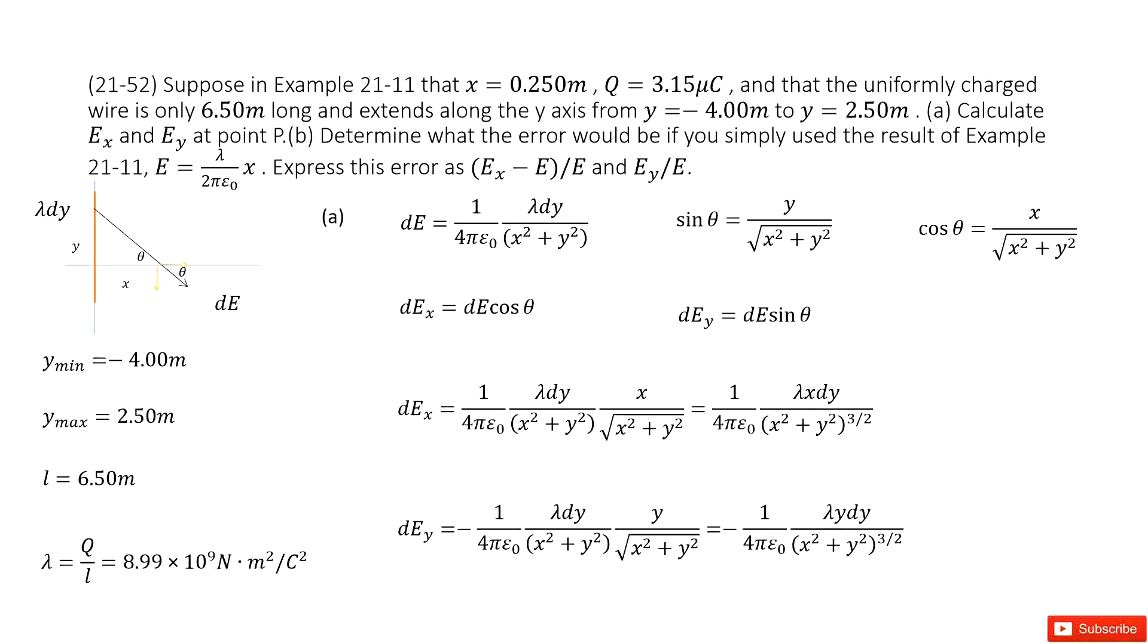Chapter 21 is about electric charge and electric field density. This is a follow-up problem for Example 11. We have a uniform charged wire.